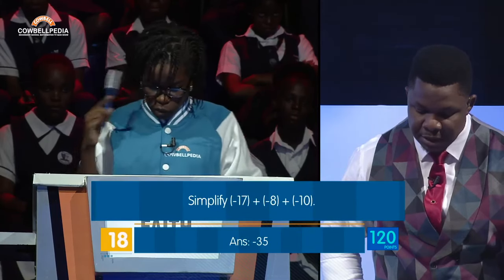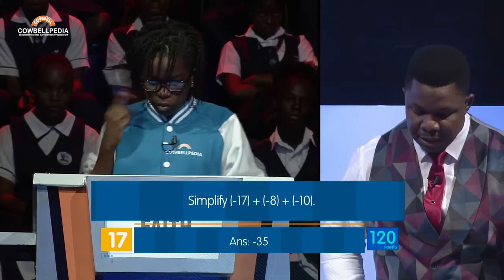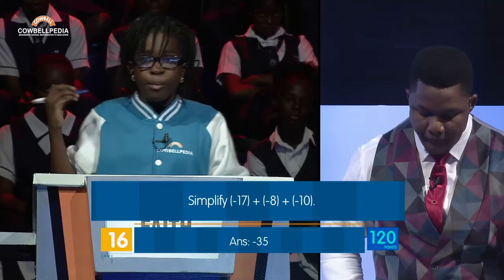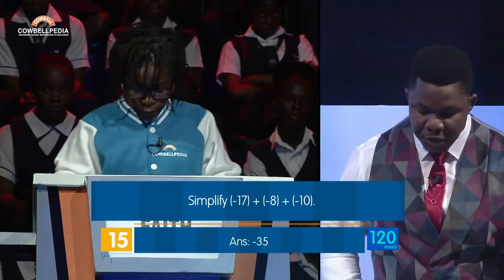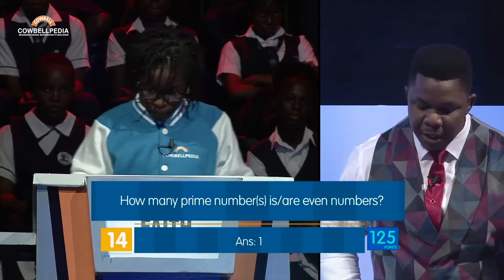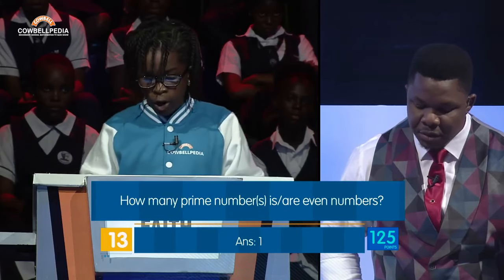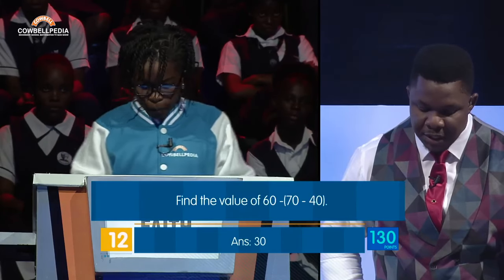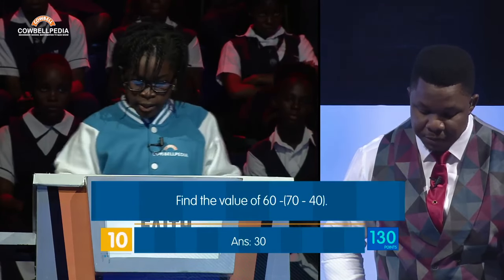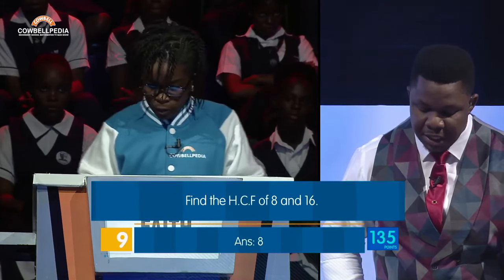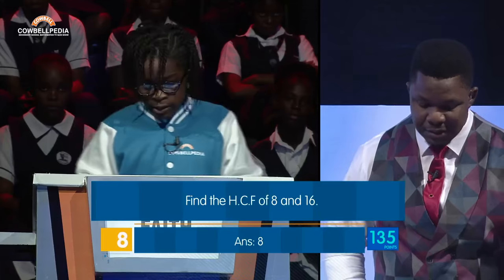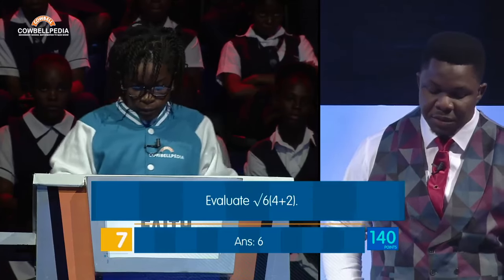Simplify minus 17 plus minus 8 plus minus 10. Minus 35. Correct. How many prime numbers? 1. Correct. Find the value of 60 minus 70 minus 40. 30. Correct. Find the 8th of 80. 8. Correct.